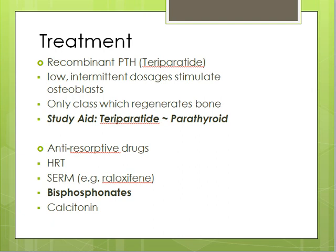This is important because recombinant PTH is the only class of drugs used to treat osteoporosis that can actually regenerate the bone. All other drugs are merely able to prevent the bone from getting worse — recombinant PTH can actually make the bone better.